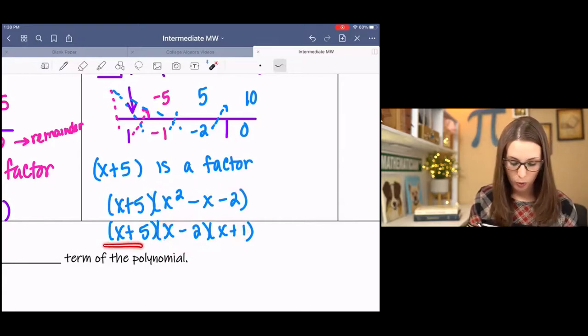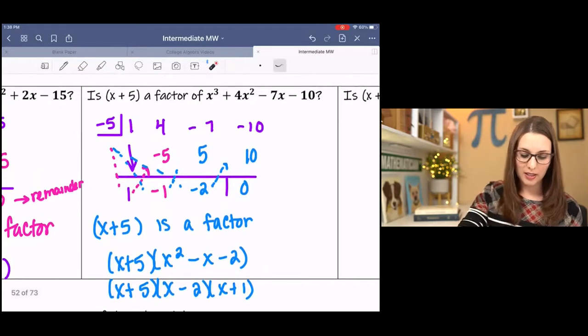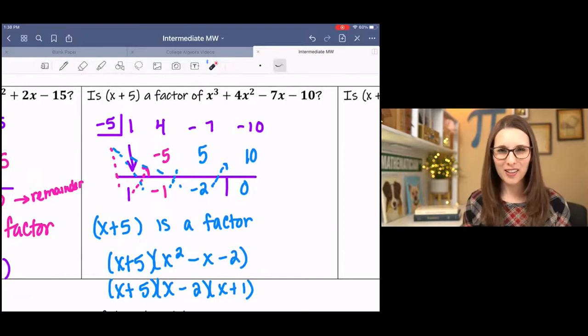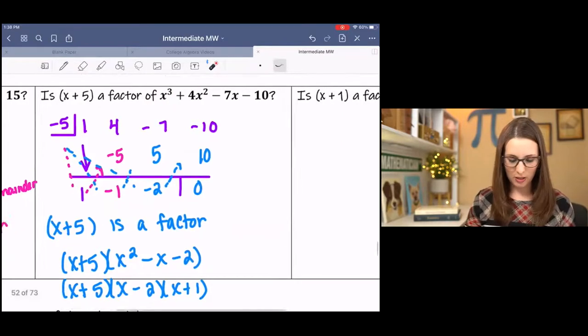So this is factored form of this. And now I have 1, 2, 3 factors which makes sense because it is x to the third. Isn't that fun? I love synthetic division. I think it's so nice and neat.